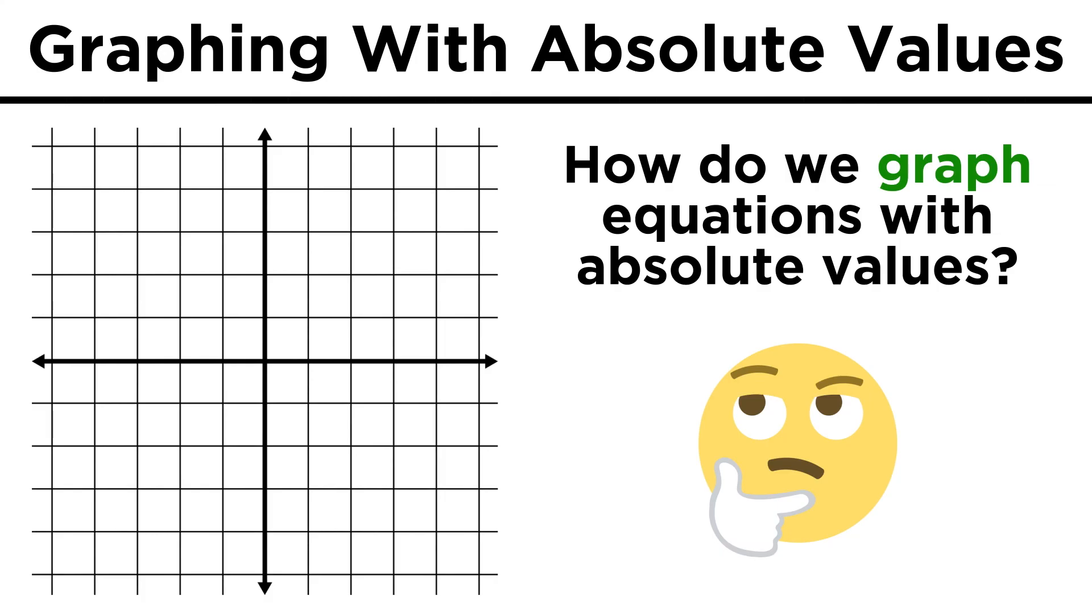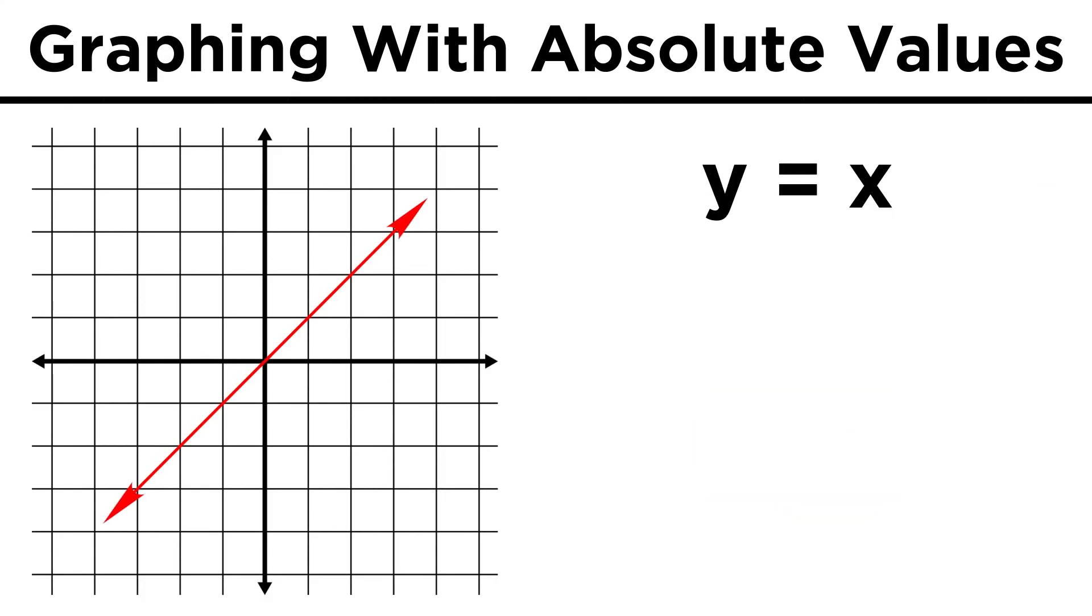The last thing we want to do is look at simple graphs with absolute values. We know that a graph of y equals x will look like this. The x and y values at every single point are equal to one another, and it's just a line with a slope of one and a y intercept of zero.